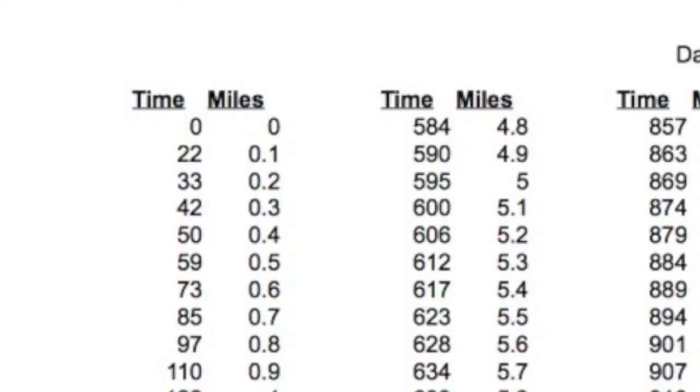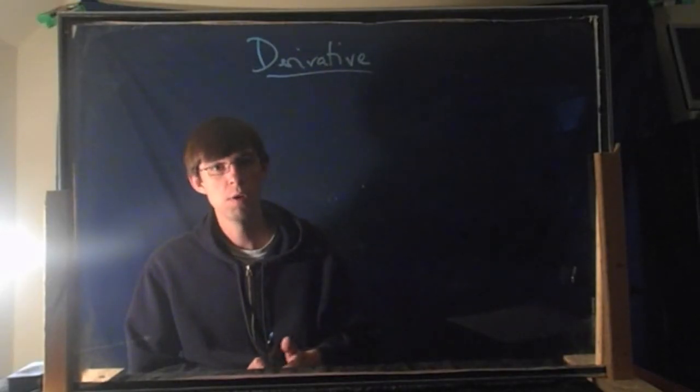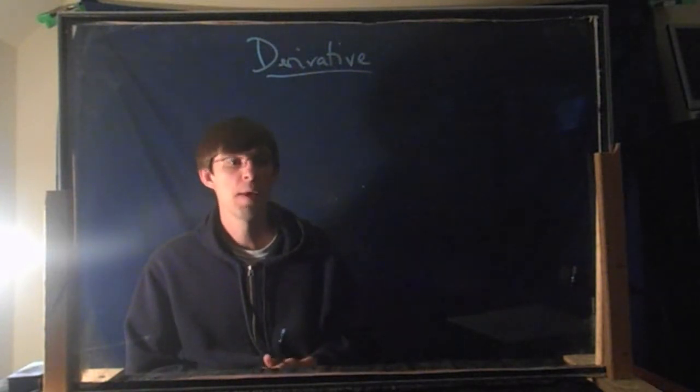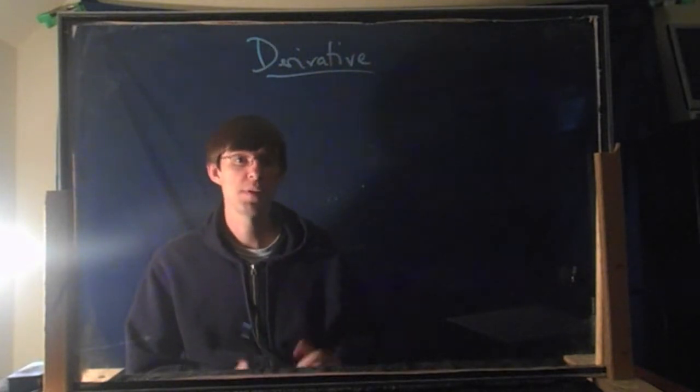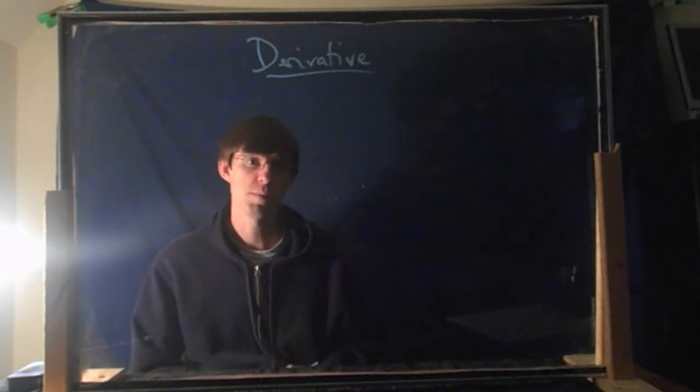You can see the first thing there, it says at time zero I had gone zero miles. And then at time 22, 22 seconds is what it took me to go the first 0.1 miles. And then you can see how long it took me to go 0.2 miles, et cetera. I did my whole trip there. It was about 16, 17-mile trip, and it took me however long it took me.